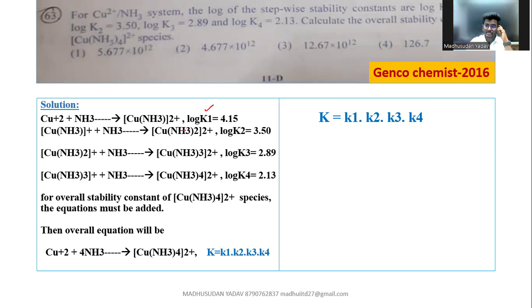Log K1 value means that is the first step between copper and ammonia ion reaction. So the first step if you write, this is how it looks. So log K1 value is 4.15.